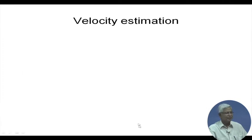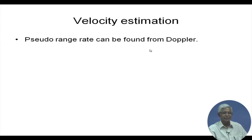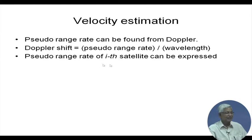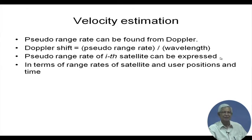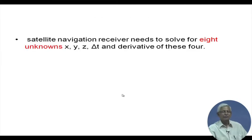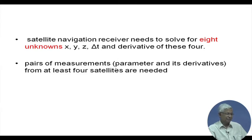Velocity estimation is much simpler. The pseudo-range rate can be found from the Doppler shift, which is the pseudo-range rate divided by the wavelength. The pseudo-range rate of the i-th satellite can be expressed in derivative form of the earlier quadratic equation, in terms of range rates, satellite and user positions, and time. This can be solved using a set of four equations, similar to position determination. Therefore, the receiver needs to solve eight unknowns: x, y, z, delta-t for position, and derivatives of these four for velocity, requiring measurements from at least four satellites.